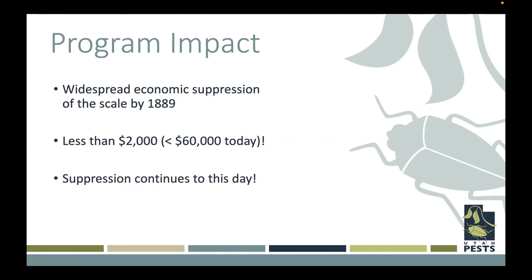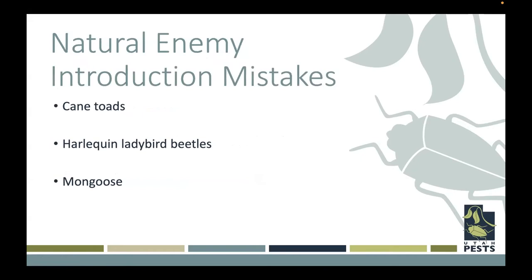That's kind of the goal of biological control — to create a self-sustaining system. It's going to be a big upfront cost, but it's going to save a ton of money over time rather than going out into our fields and spraying with insecticides yearly.